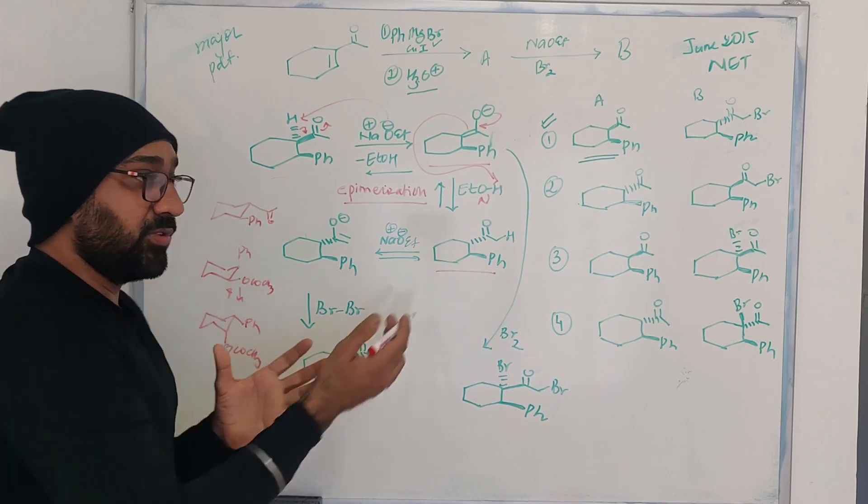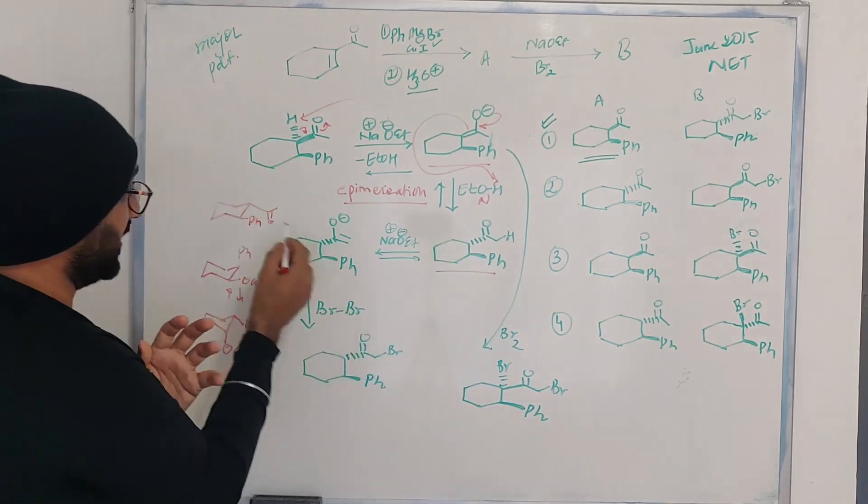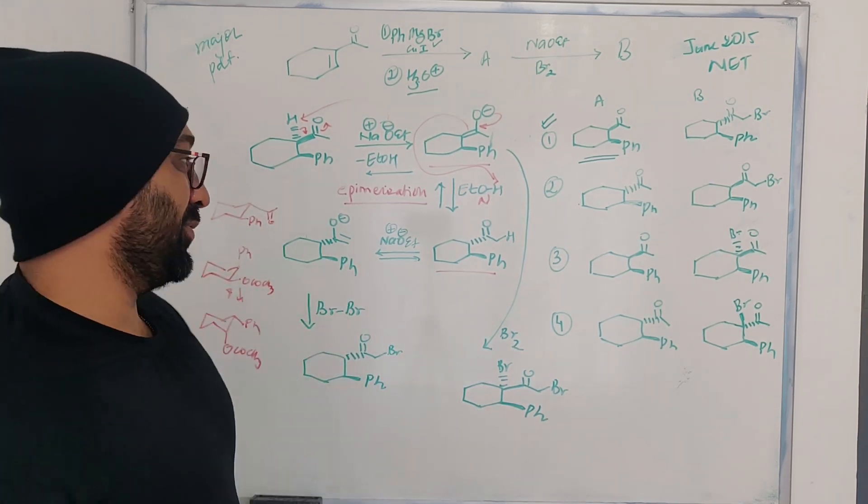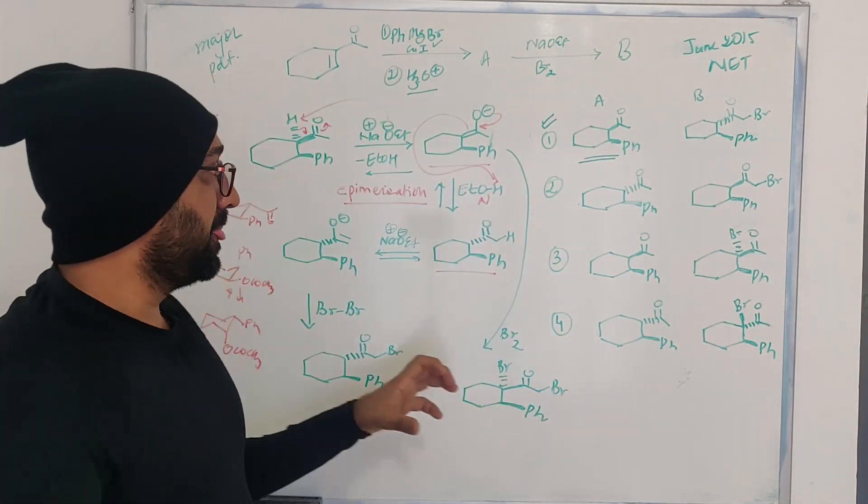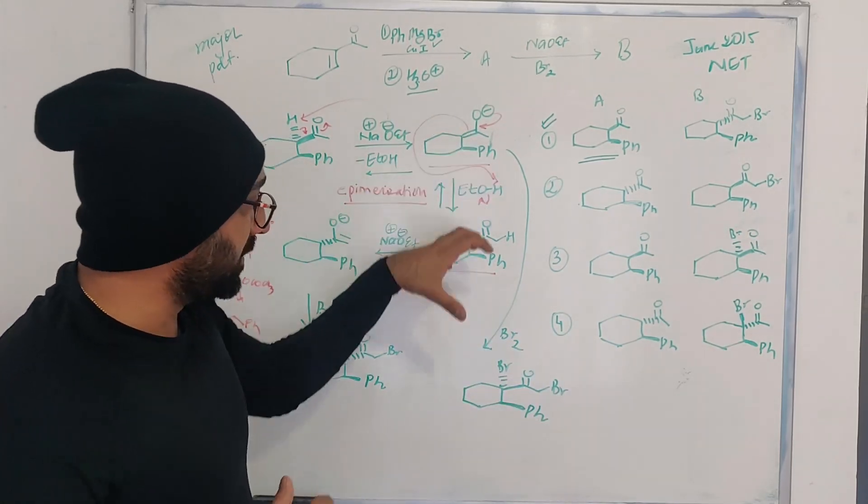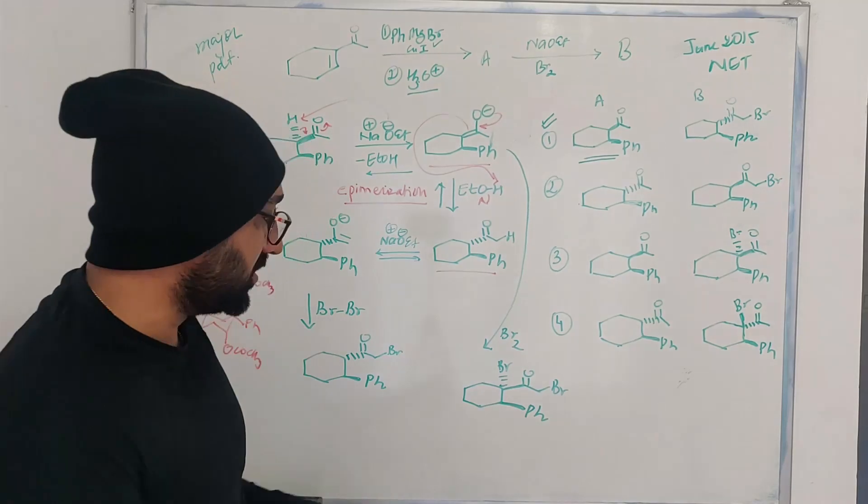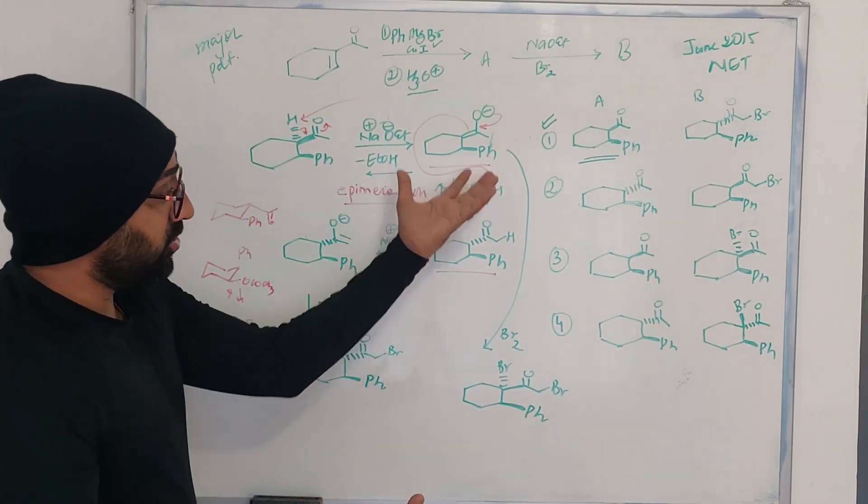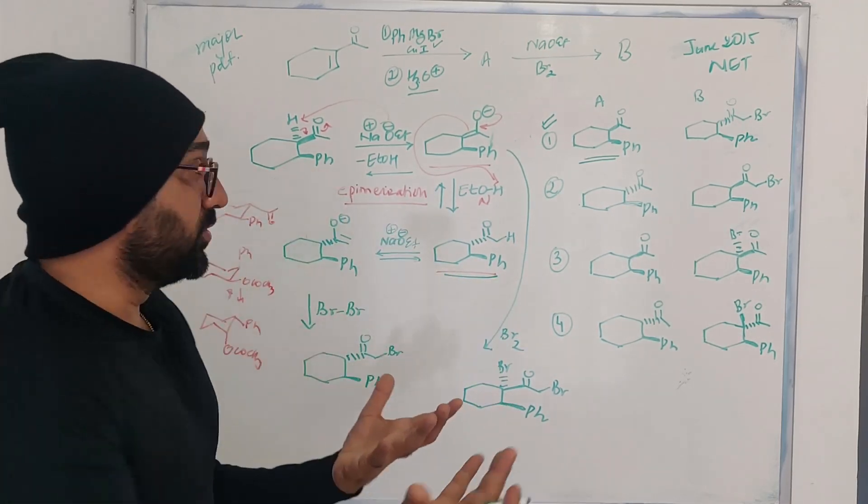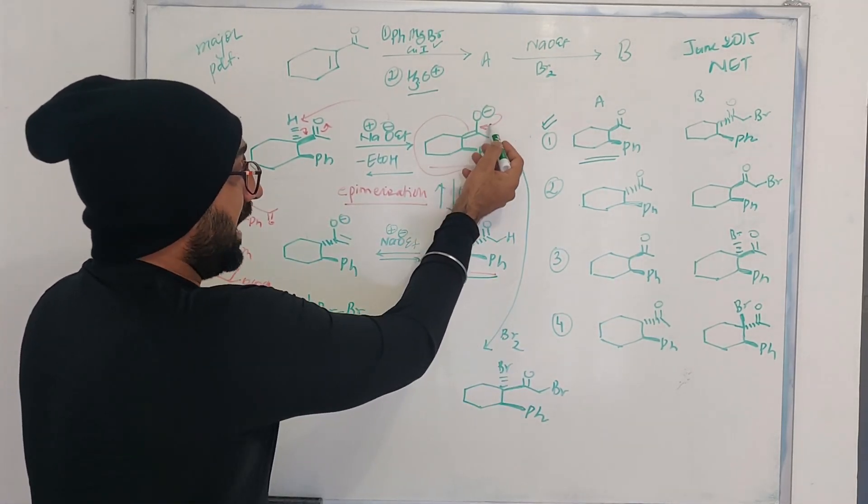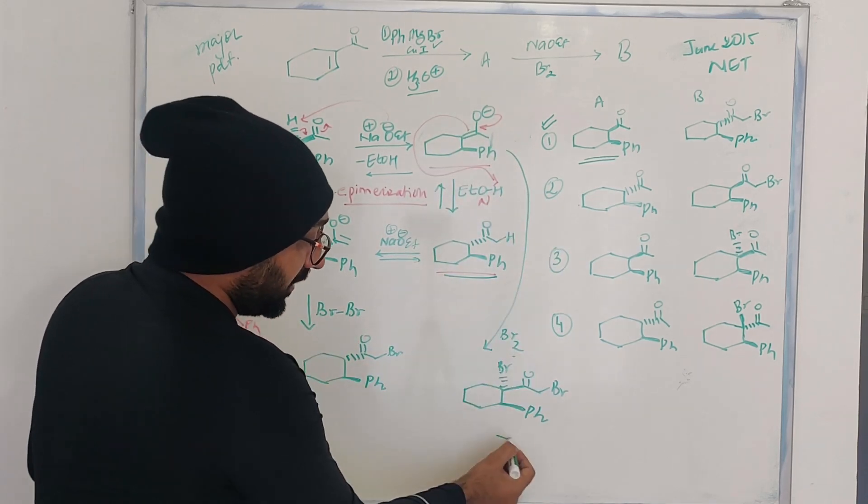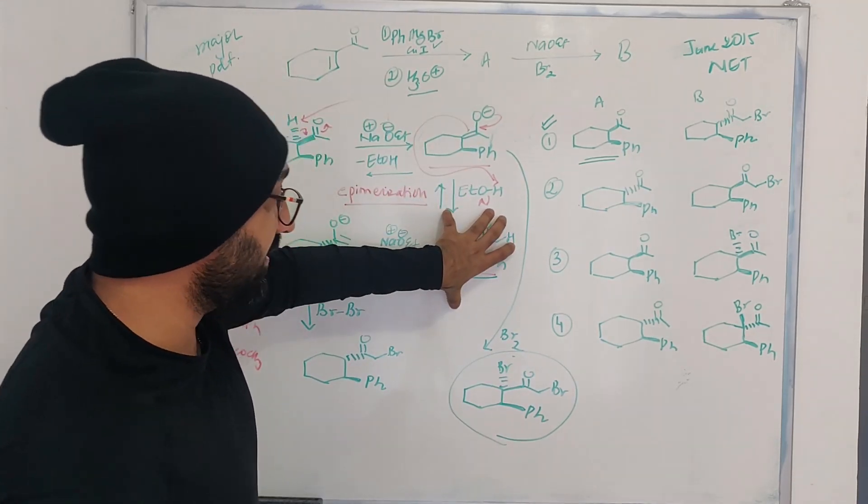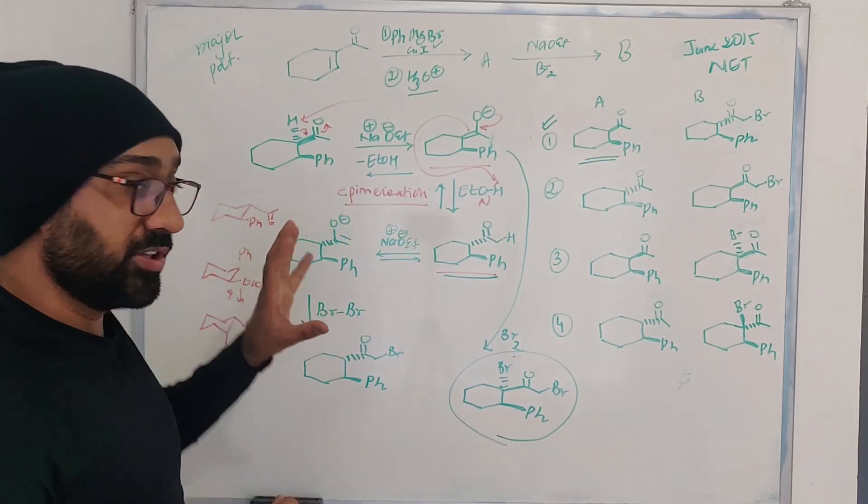Now you can understand what is the thermodynamically more stable product that drives this equilibration. Because these two substituents are becoming trans to each other, they can exist in this conformer where both can be equatorial-equatorial. So it is this drive which makes this epimerization happen. Now coming back to the second part, you can presume that here this could have easily attacked the bromine to give you the desired product. As I said, it is this drive to get this stable product which carries this reaction in the forward direction.